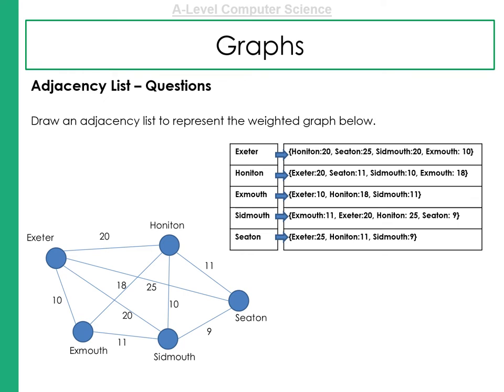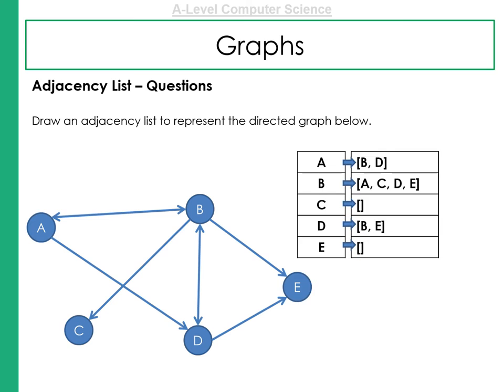So here's an example question that you might face for an adjacency list in the example. Draw an adjacency list to represent the weighted graph below. Pause the video. Try and complete this. Once you've done that, have a look at the answer. Here's a second question for an adjacency list. But remember, this time there's no weights. Draw the directed graph below. Pause the video and complete that now.